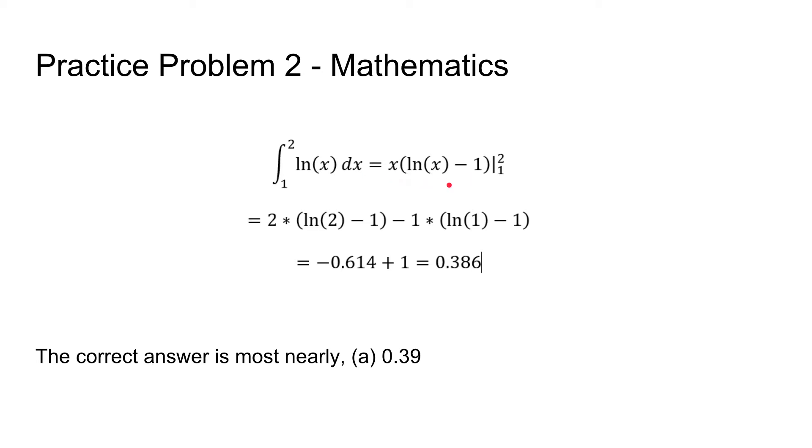Then we're going to integrate from 2 to 1. We're basically taking the area under the curve of natural log x from 2 to 1, and the value is going to become 0.386. So our correct answer is most nearly a, 0.39.